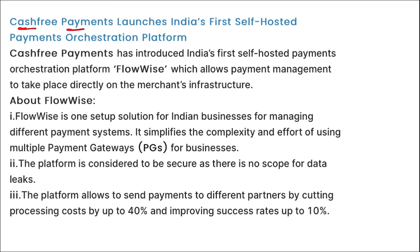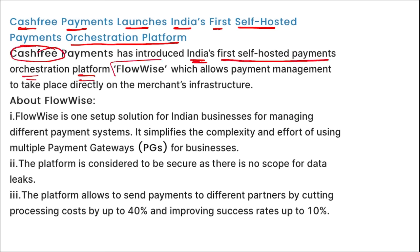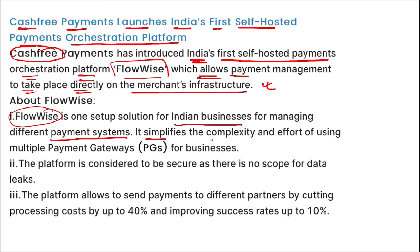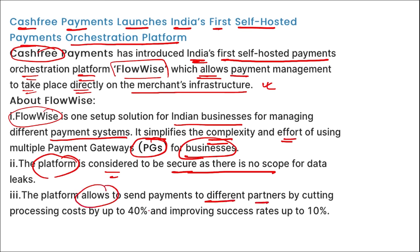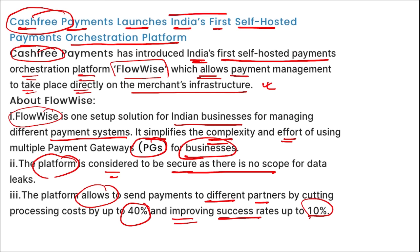Cashfree Payments has introduced India's first self-hosted payment orchestration platform — Flowwise — which allows payment management to take place directly on the merchant's infrastructure. It is a one-stop solution for Indian businesses managing direct payment systems, simplifying the use of multiple payment gateways. The platform is secure with no scope for data leaks, cuts processing fees by up to 40%, and improves success rates by 10%.